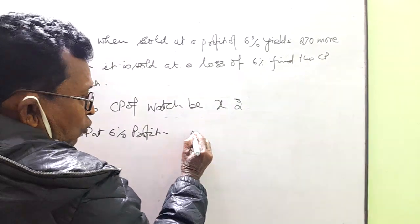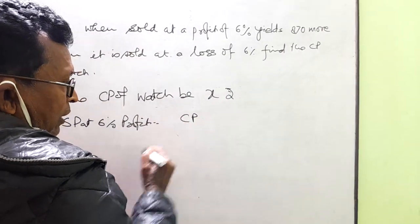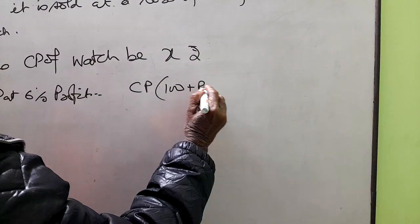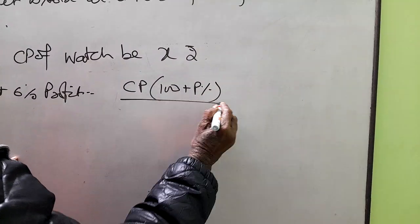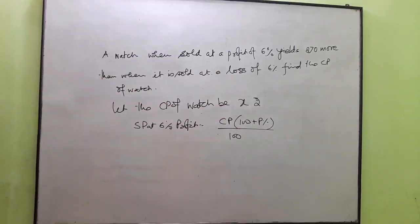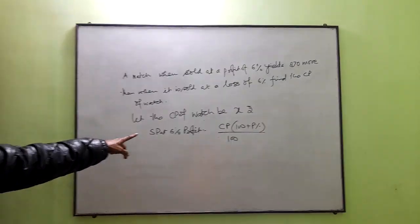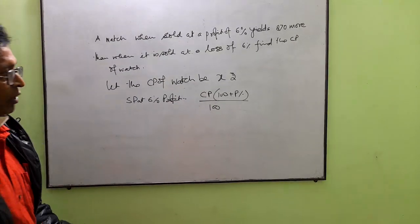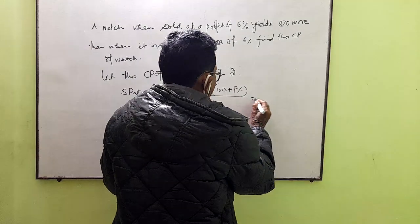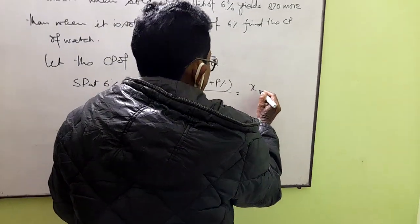SP is equal to CP into 100 plus profit percent divided by 100. So it will be x into 100 plus 6 by 100.